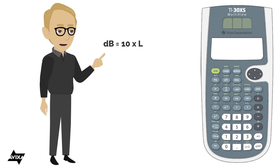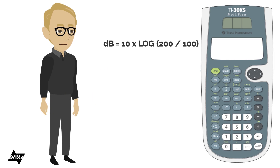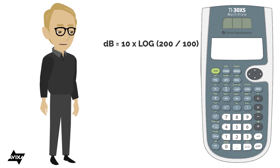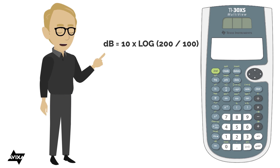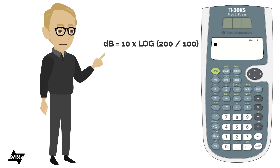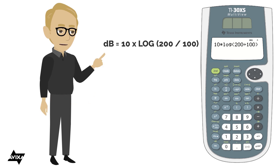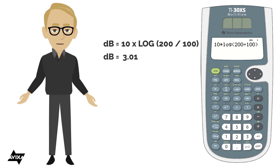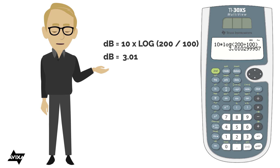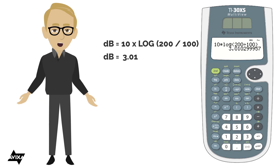I'm going from 100 to 200, increasing, so larger number first — I'm expecting a positive result: 200 divided by 100. On the TI-30 I can enter the entire equation: 10 × log(200 / 100), close the parenthesis, and hit enter. The result is 3.01 — practically speaking, a 3 dB increase. You would probably already know this.